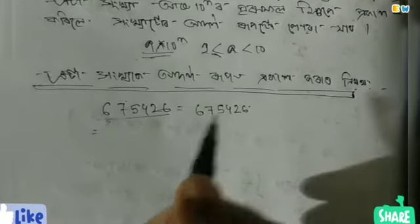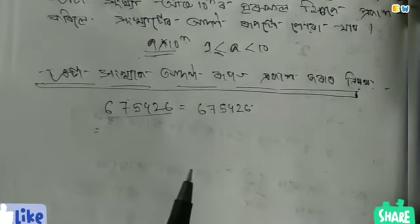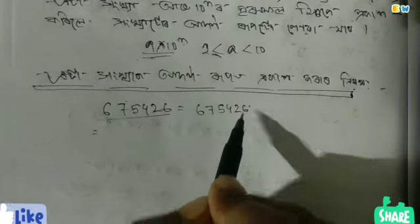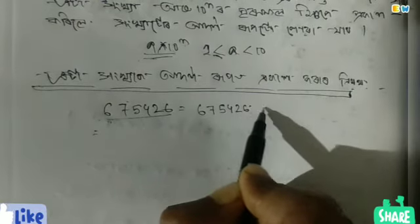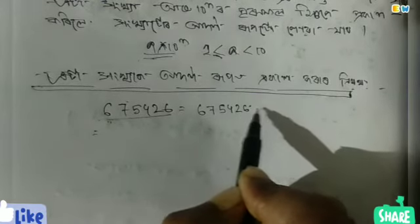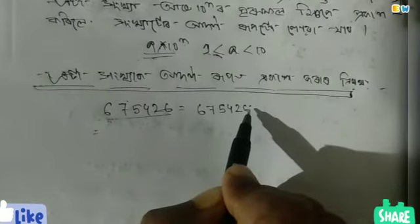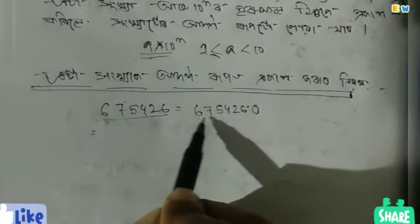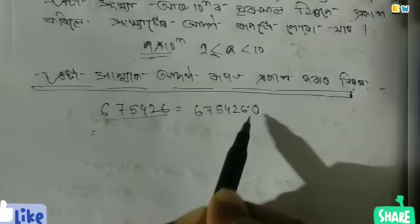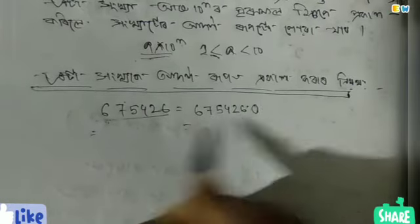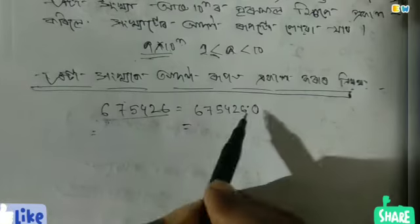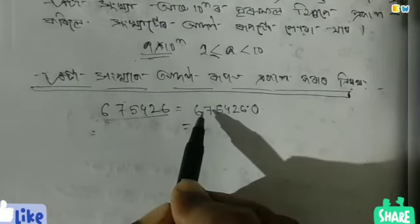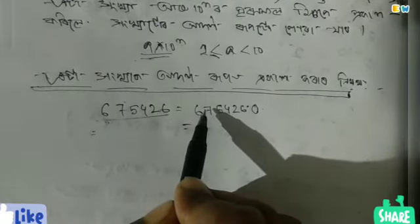If you have any language question, then you can just add more language. Next, you can add more language name into the language. This language can be an important part of the language name as a reader. The language name says 675426. This is a request to receive an option.